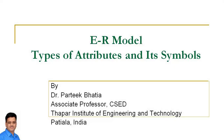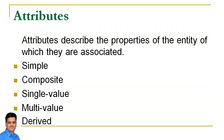Hi, myself Pratik and in this session we will discuss types of attributes and its symbols in ER model. Entities ki jo properties hain usko hum attribute ke naam se jaante hain. So the properties of entities are known as attributes, and there are five types of attributes.